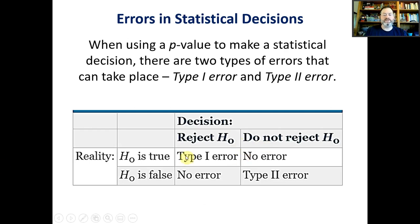That leads us to this table. You always either reject the null or do not reject the null hypothesis. But in reality, if the null is true and you reject it, then you've made what's called a Type 1 error. If the null is false and you do not reject it, that's called a Type 2 error.